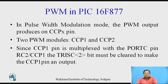PWM module in PIC 16F877 — PWM stands for Pulse Width Modulation. In PWM mode, the PWM output is produced on the CCP X pin, where X can be either 1 or 2, because in PIC 16F877 two PWM modules are provided. These are called CCP1 and CCP2, which stand for Capture Compare PWM. The CCP module can operate in three modes: Capture, Compare, and PWM. In this session, we concentrate only on the PWM mode.